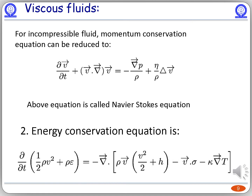If we solve the momentum continuity equation for an incompressible fluid, that is for which del dot v equals zero, we can find the Navier-Stokes equation. Similarly, one can write the energy conservation equation for viscous fluids. The left-hand side is the same as that of an ideal fluid. On the right-hand side, inside the divergence term, the first term is the same as for ideal fluid, the second term is due to dissipations from viscosity, and the third term is due to heat transfer among the molecules of the fluid. Here kappa is called the thermal conductivity of the fluid.